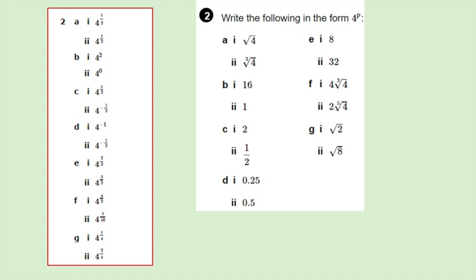Part D1: 0.25 is 1 over 4, so that makes it 4 to the power of negative 1. Part D2 is 1 over 2, which is 1 over the square root of 4, giving 4 to the power of negative 1 half. Part E1: think of 8 as the square root of 64, and 64 is 4 cubed, so we have the square root of 4 cubed, giving 4 to the power of 3 over 2. For 32, think of 32 as 2 to the power of 5, which is the square root of 4 to the power of 5, giving 4 to the power of 5 over 2.